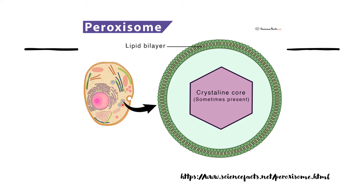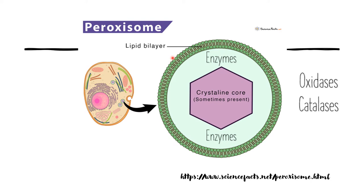The image here shows an enlarged view of a single peroxisome. You can see that it has its own outer membrane which has a lipid bilayer, and there may be a crystalline core inside in some peroxisomes. Most importantly, there are enzymes within these peroxisomes that help in the detoxification process. The main enzymes are various types of oxidases and catalases.